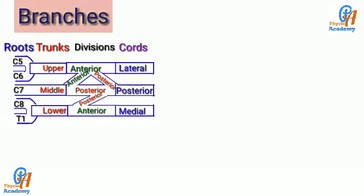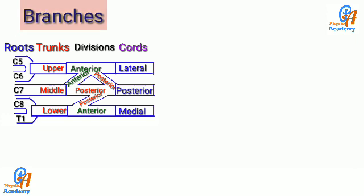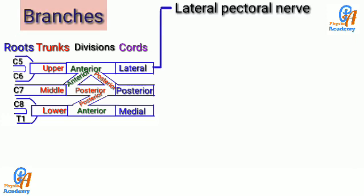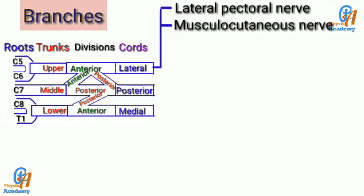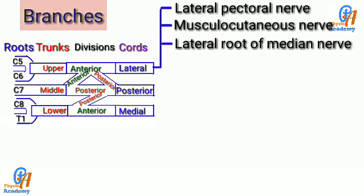The lateral cord gives three branches. First is the lateral pectoral nerve. Second is the musculocutaneous nerve. Third is the lateral root of the median nerve. To remember these branches in a short way, remember the first letter of each one: L, M, L.